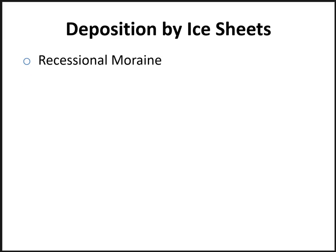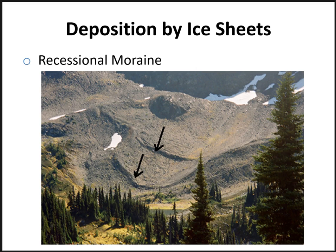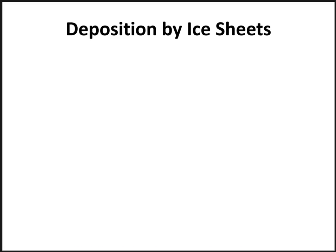Behind the terminal moraine is what's called a recessional moraine, deposited when the ice sheet recedes and stops for a period of time, then recedes again. There are two recessional moraines formed by a glacier that's been receding up this valley — somewhere below those is the terminal moraine. Ground moraine is till lodged beneath the glacier and generally found behind the terminal moraine. Wetland areas are often created where ground moraines were.